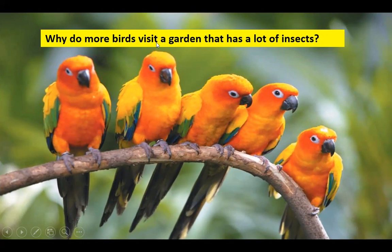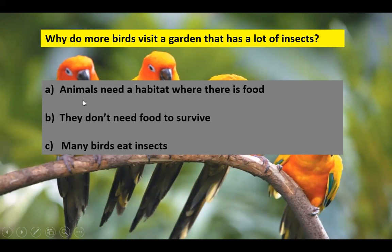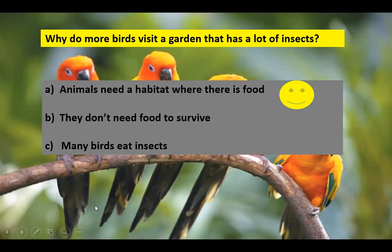Why do more birds visit a garden that has lots of insects? Option A: animals need a habitat where there is food. Option B: they don't need food to survive. Option C: many birds eat insects. The correct answers are A and C.